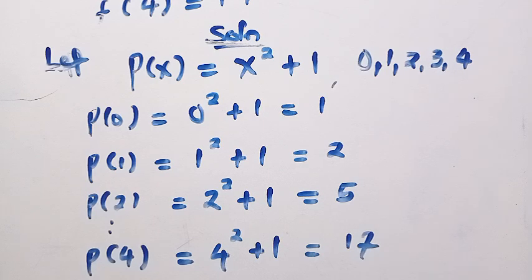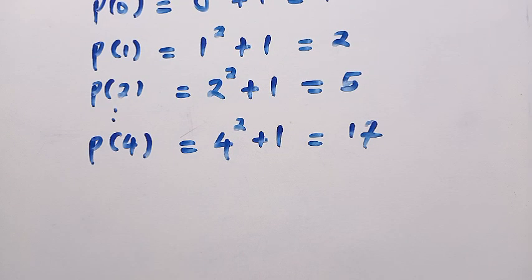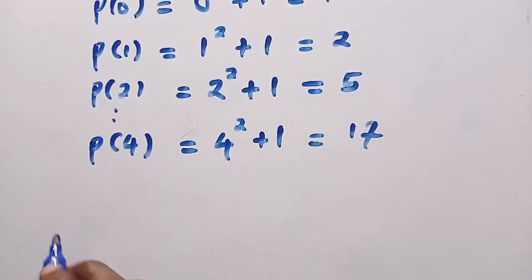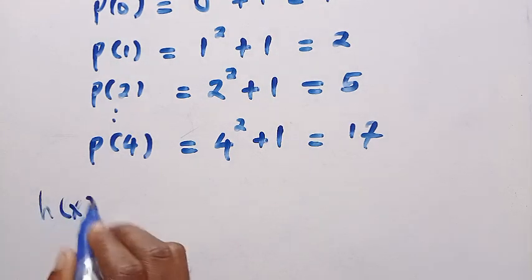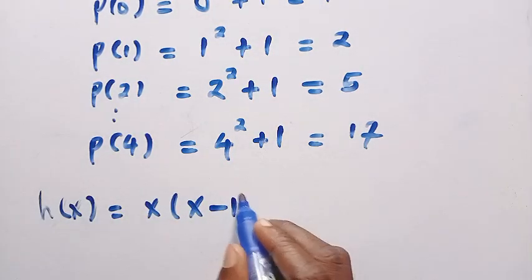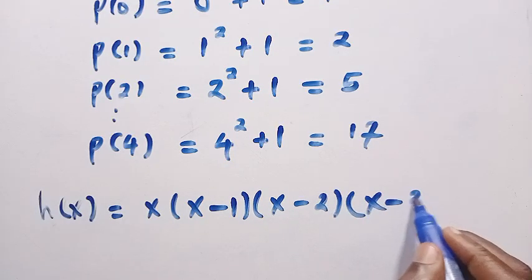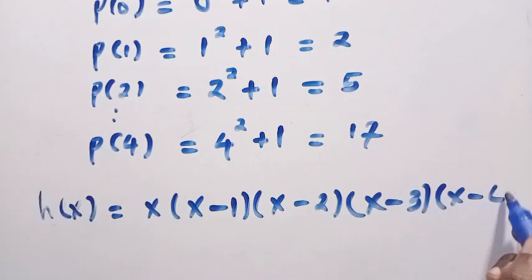But because the question says of degree 5, we are not going to test for p of 5. If we test for p of 5, we got wrong answer as just 26. Then we need to have a general formula for this. Since we have known the p of x, we have to know the degree of 5 equation as well. To know the degree of 5 equations, I'm going to let that one be h of x. h of x will be x into bracket of x minus 1 multiplied by x minus 2 multiplied by x minus 3 and multiplied by x minus 4.